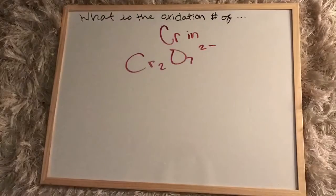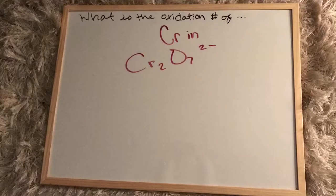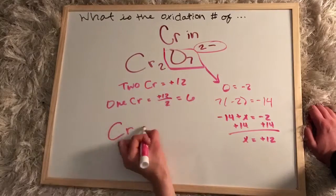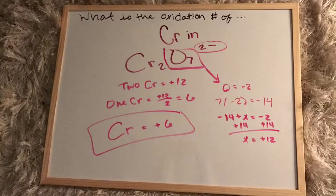Now for this final example, I encourage you to pause the video right here and see if you can complete it on your own, and only resume the video when you're ready to check your answer. So just like in every other problem, we'll start with the oxygen and use the charge to find two chromiums, and then divide by two to find one chromium to be positive six.